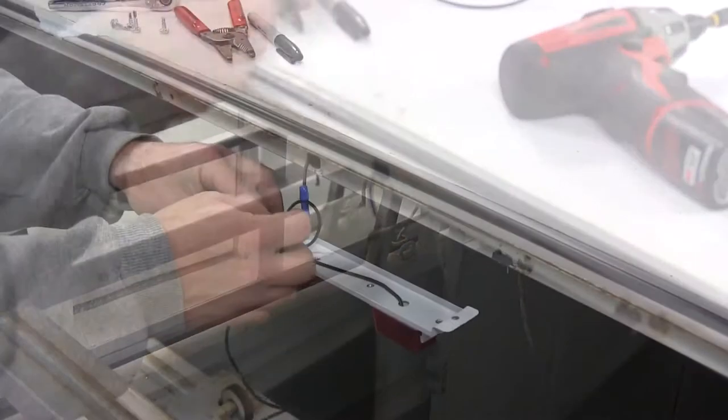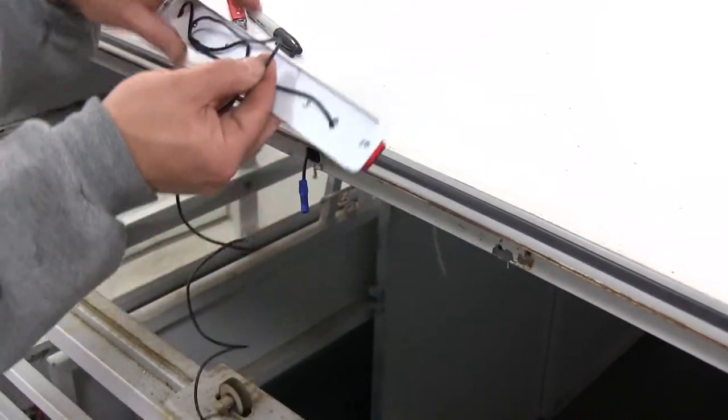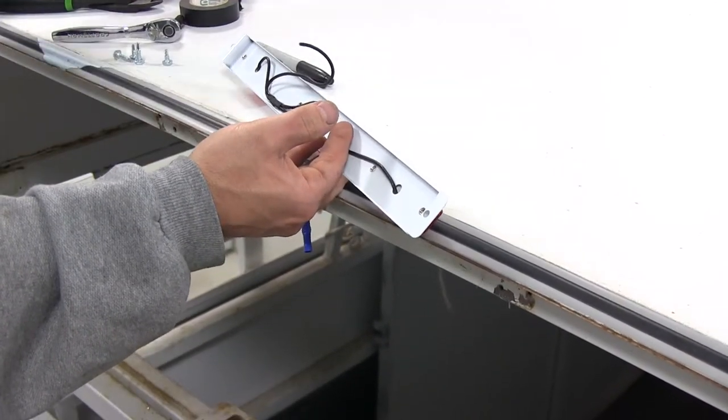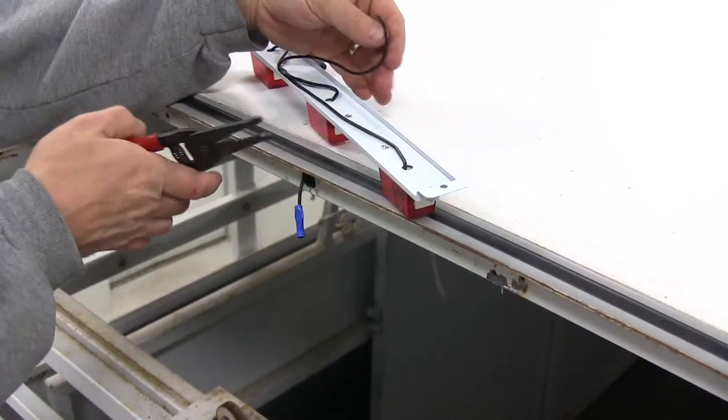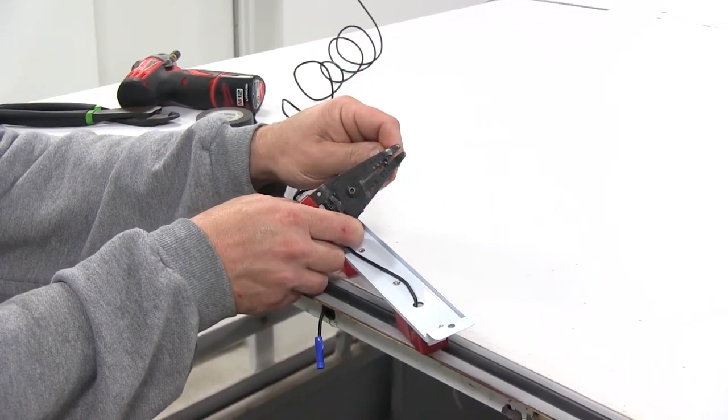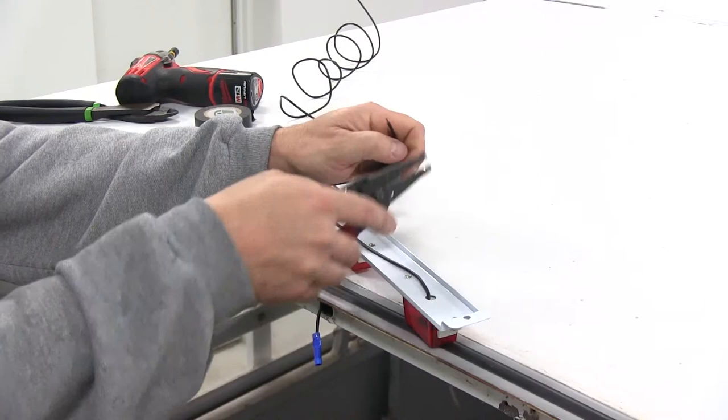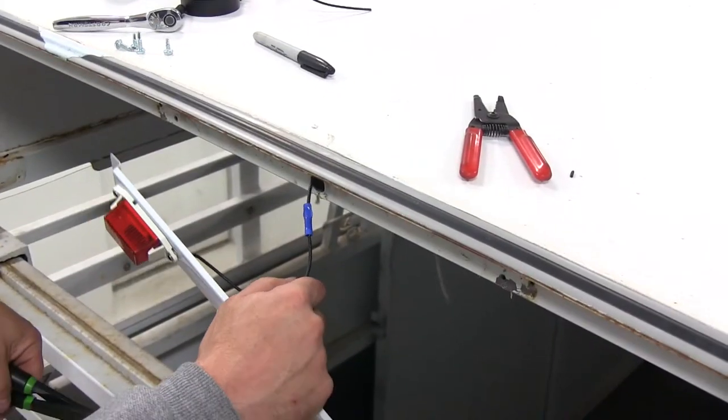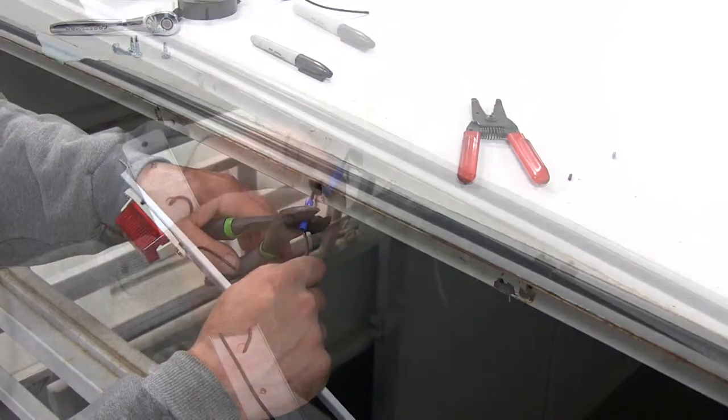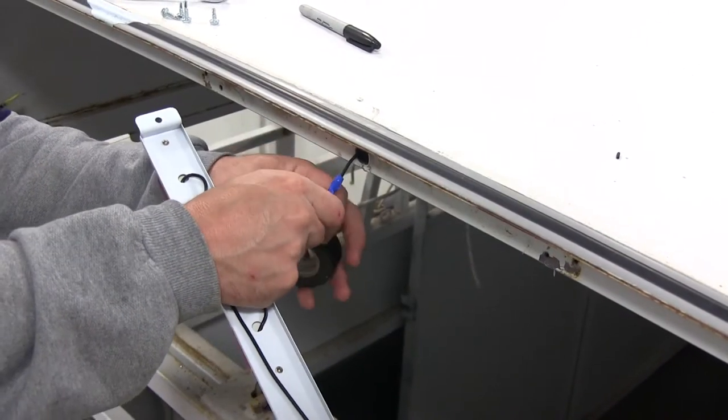Strip a little wire back. We'll trim off the excess here. Strip our wire back. We'll trim down our butt connector. Now we'll add a little electrical tape here to our connection.